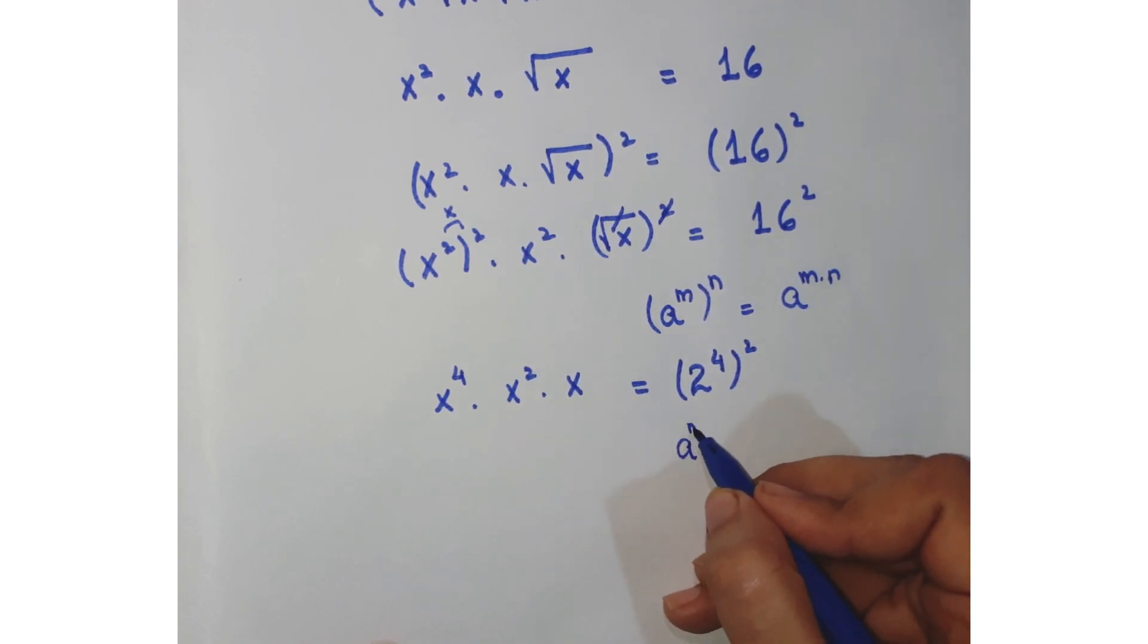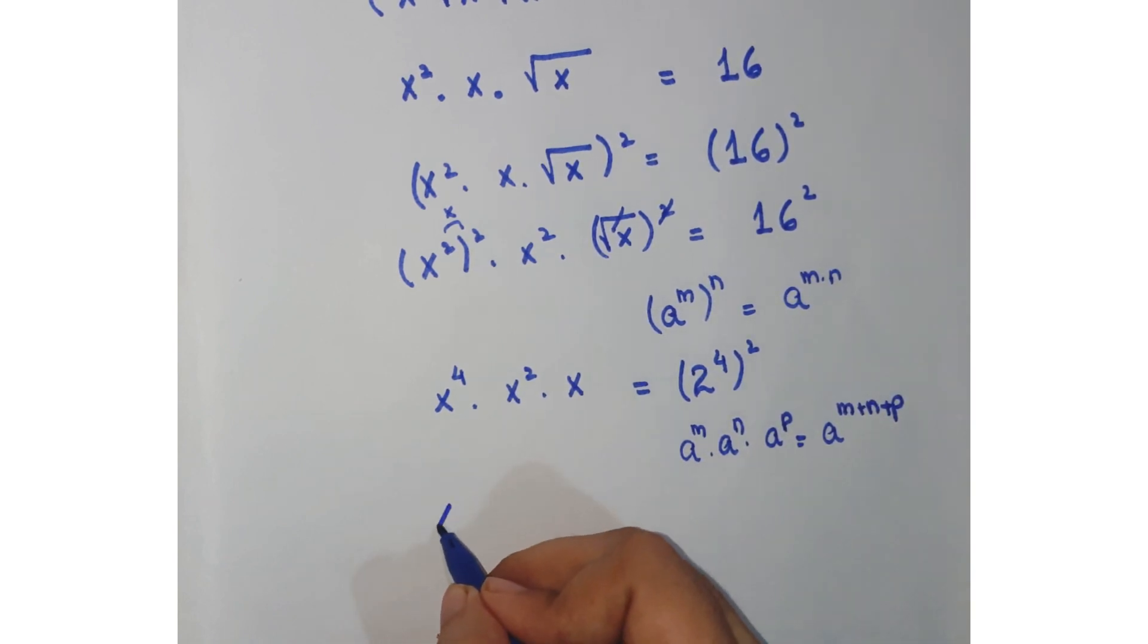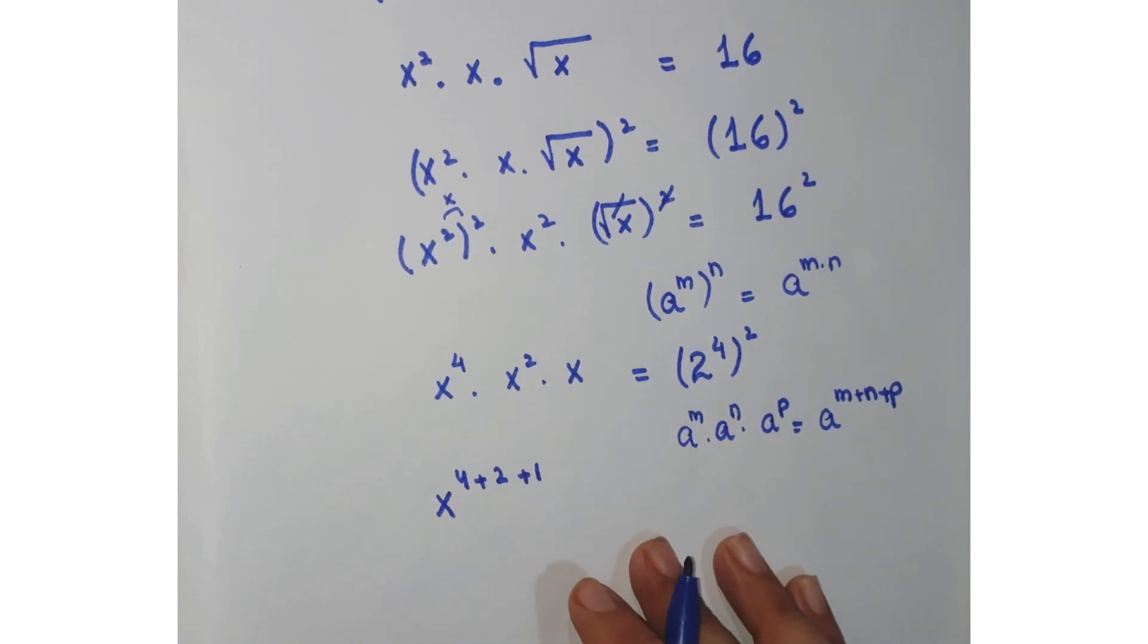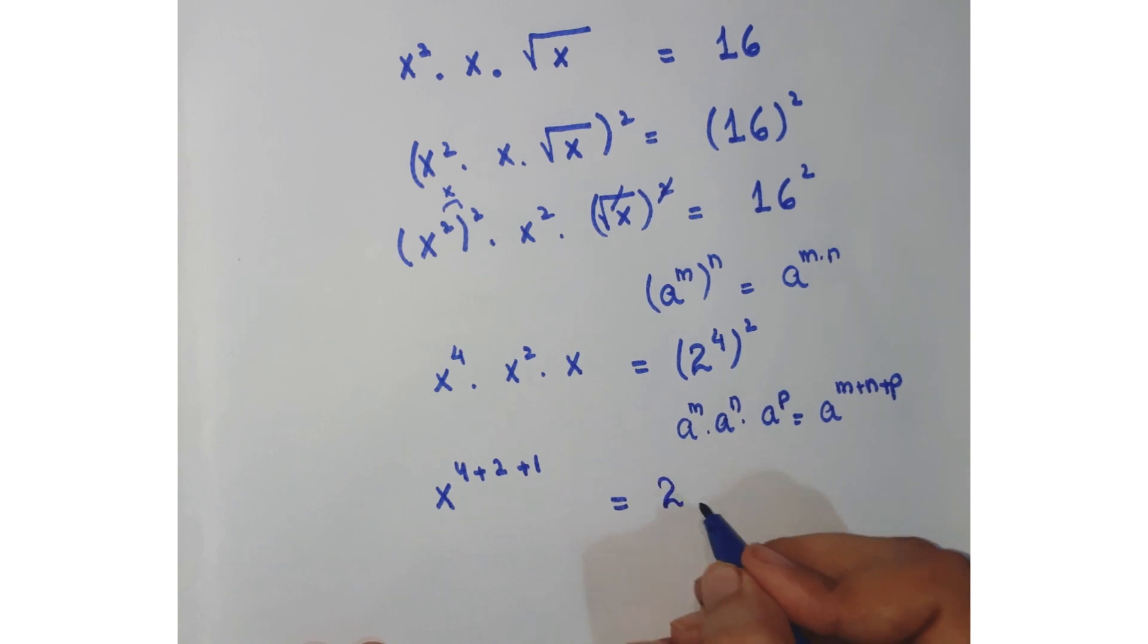As you know that a^m · a^n · a^p can be written as a^(m+n+p), so here you get x^(4+2+1) and again applying the same identity here, this becomes 2⁸.